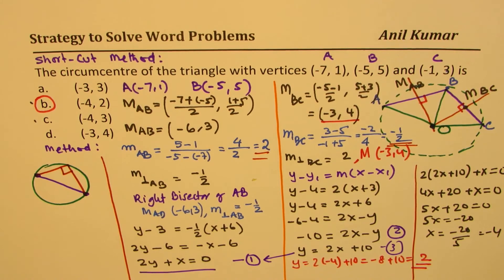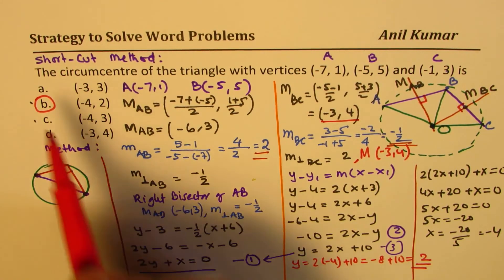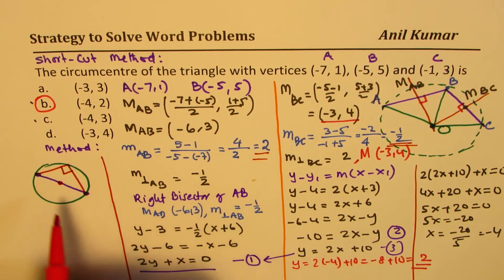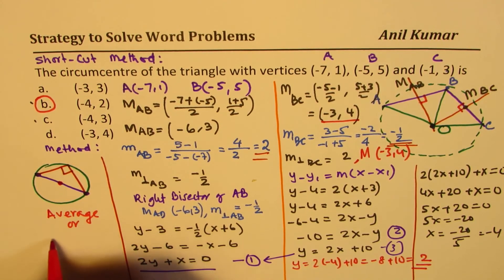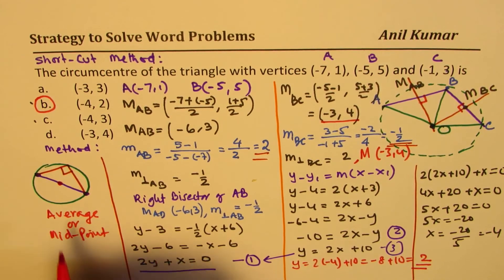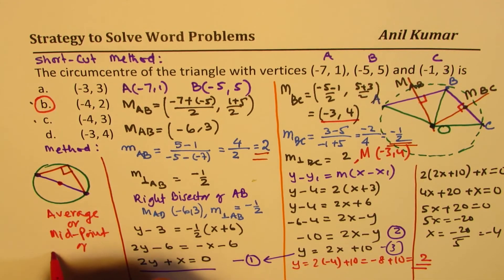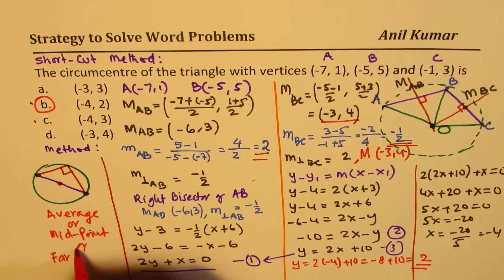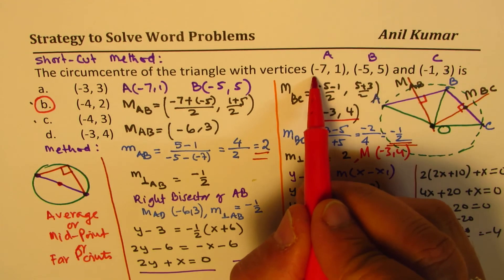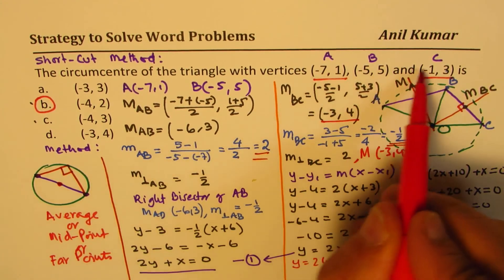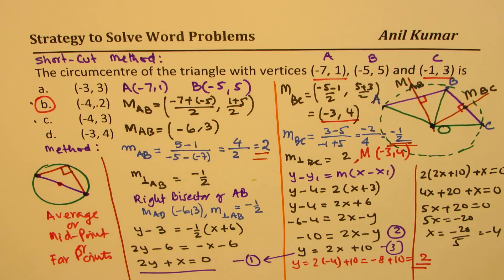So that gives you a hint that your circumcenter is basically average or midpoint of far points. What I'm trying to say that these two values are far away. So if you check the midpoint, you get your answer at times.